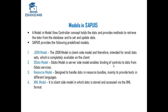The first one is the JSON model. The JSON model always works with JSON data, so the data must be in JSON format. It is always a client-side model. If you want to store data that is not too large, you generally prefer the JSON model. For example, if you want to bind JSON data to a table, you can use the JSON model.